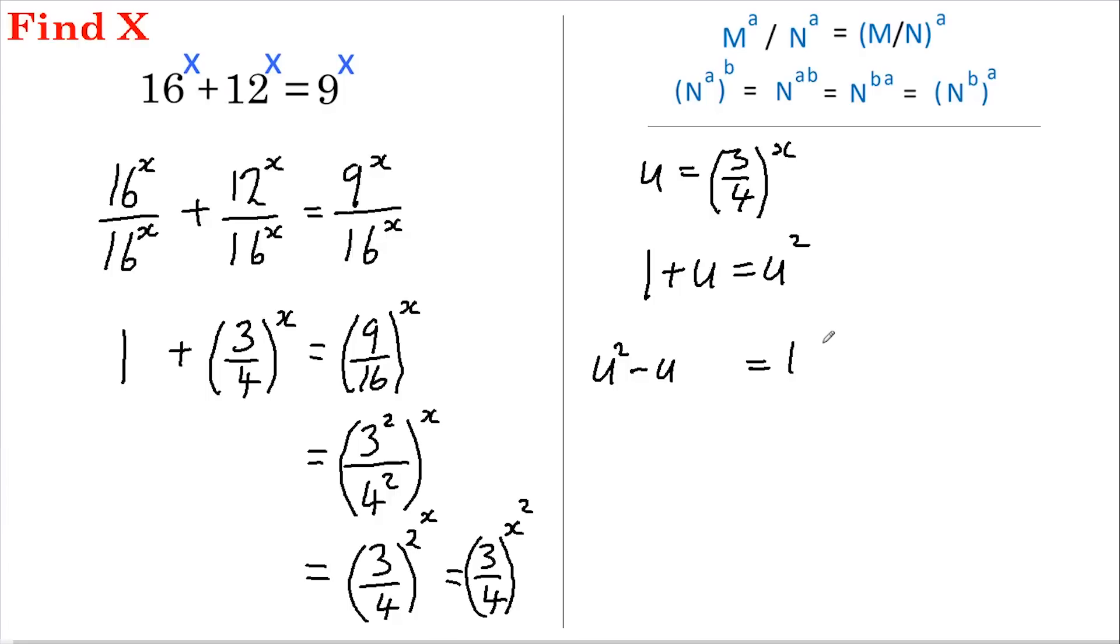So I'm going to take the coefficient here which is 1, I'm going to halve it and square it, and I'm going to do the same to the other side, so plus half squared.